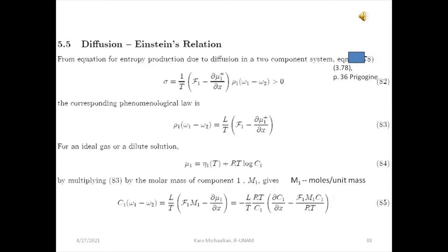In this section, we're going to consider the relation between the diffusion coefficient and the mobility coefficient, known as Einstein's relation. Einstein discovered this using kinetic theory of gases, but here we're going to use purely the non-equilibrium thermodynamic formalism. We consider the entropy production due to diffusion for a two-component system, allowing for the fact that there could be an external force over the system — for example, an electrical potential giving rise to force F₁. There are only two components, gamma equal to 1 and gamma equal to 2.